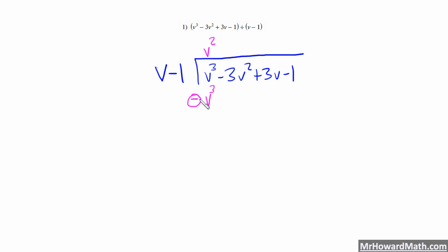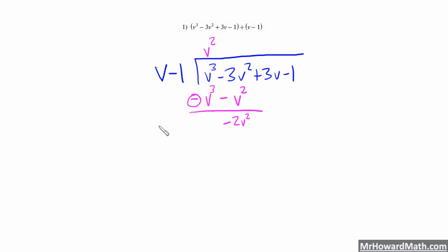We're going to subtract all of this. We do v squared times negative 1, which gives me negative v squared. So v cubed minus v cubed gives me 0, so that cancels. And negative 3v squared minus negative v squared is the same thing as negative 3v squared plus v squared — remember, subtracting a negative is the same thing as adding. So the rule is you're doing the opposite of whatever this sign is because we are subtracting. So negative 3v squared plus v squared would be negative 2v squared.